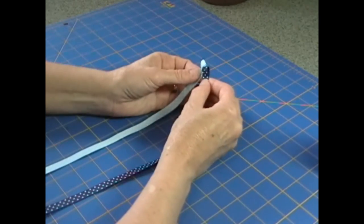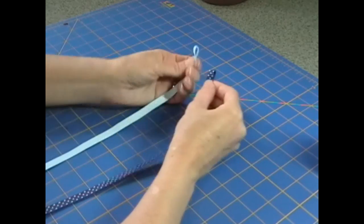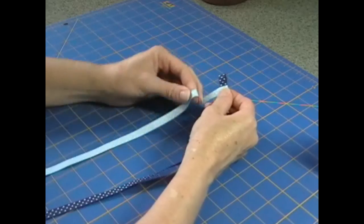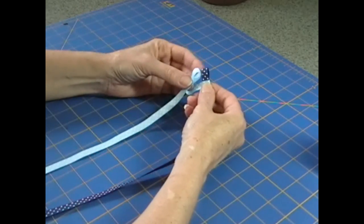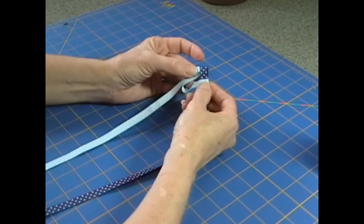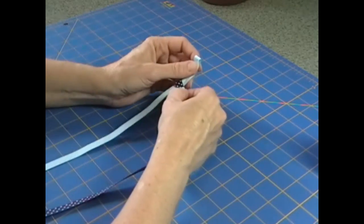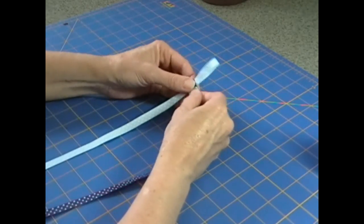So you're going to take your dark blue and feed it through the loop you made on the light blue ribbon. Now you're going to make another loop with the light blue and feed that loop through the dark blue opening. And pull it tight.